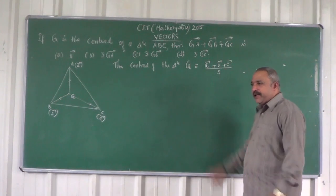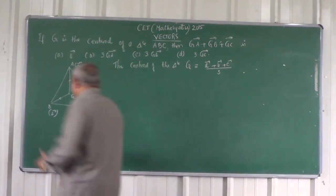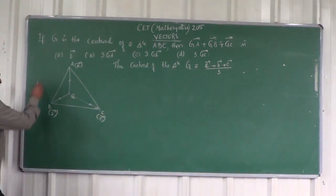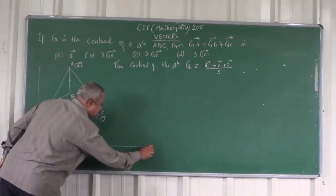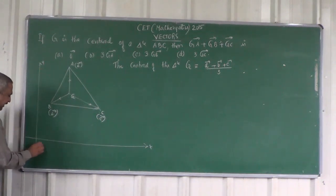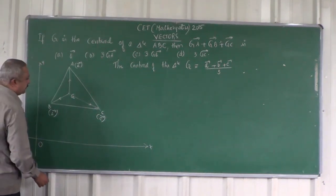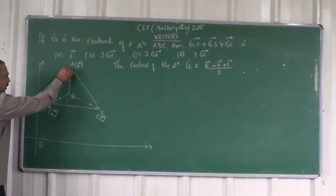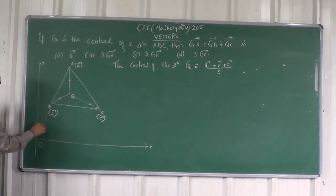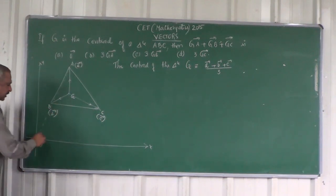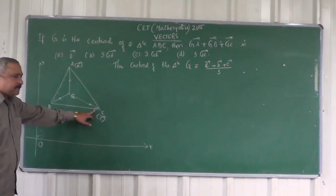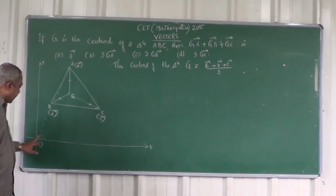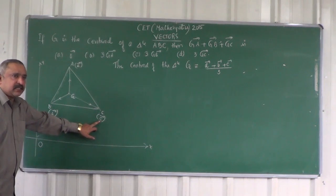What are vector A, vector B, vector C? They are the position vectors of the points. In the coordinate system, let us take O as the origin. Join OA — this is the position vector of A. Join OB — unit position vector. Join OC — position vector of the point C. Vector OC is denoted by vector C.